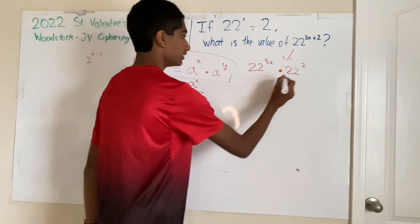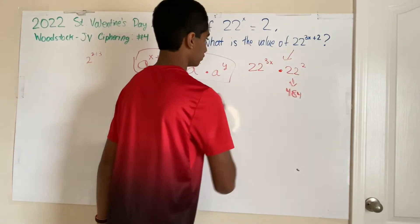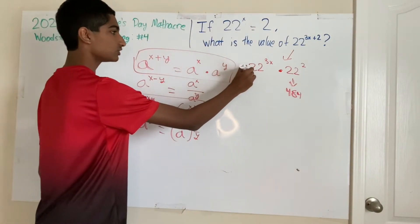And 22 squared is just 484. So we have that for now. And now we need to solve this thing.